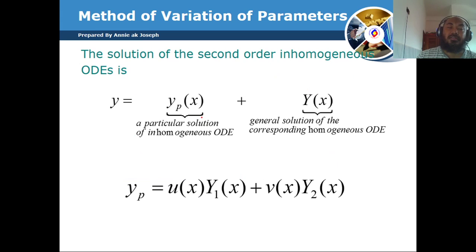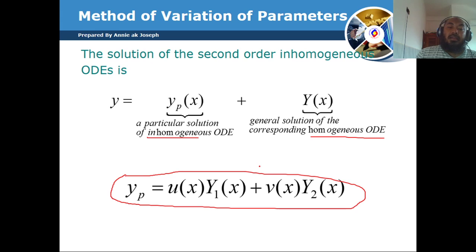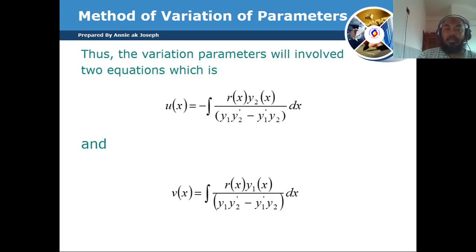The variation of parameter method gives us the general form: the solution of the second order ODE equals the particular solution of the non-homogeneous ODE plus the general solution of the homogeneous ODE. The particular solution is given by a specific equation, and we need to find U and V, which are integrals of certain terms.